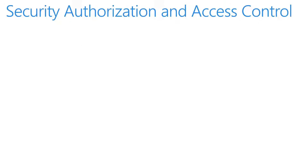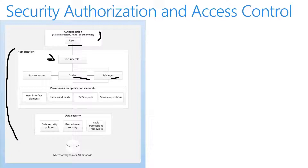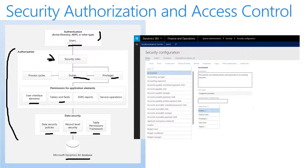Let's now take a look at security authorization and access control. On the left-hand side, authentication is handled by Active Directory, ADFS, or another type. At the top, you have to be a user in Active Directory in order to use Dynamics 365 for Finance and Operations. For authorization, we have security roles which can be linked to duties and privileges. We also have permissions — things like user interface elements, tables, and fields. Below that we have data security: data security policies, record-level security, and the table permissions framework. At the very bottom is the Dynamics 365 for Finance and Operations database.